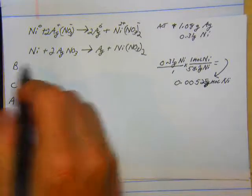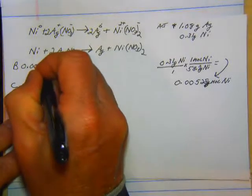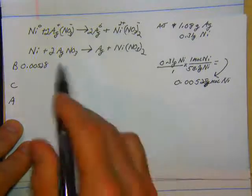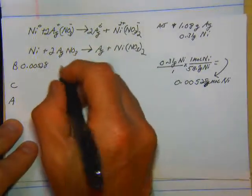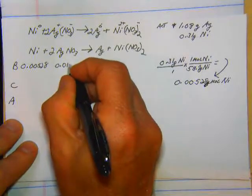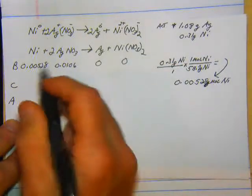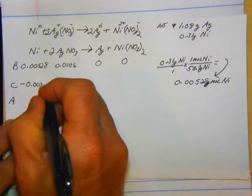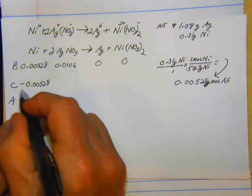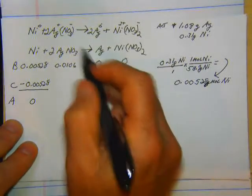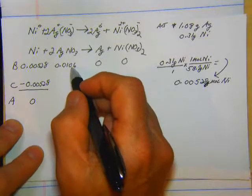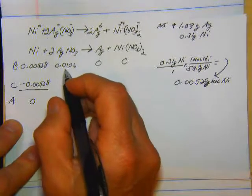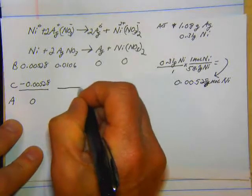Before, change, after. So our nickel is going to be 0.00528. Our silver is going to be 2 times that amount, so 2 times this is actually 0.0106. So our change, we are going to lose 0.00528. And we know that's going to be 0. We don't care about silver nitrate. You can definitely see that it is going to be more than this, so this is definitely going to be an excess.